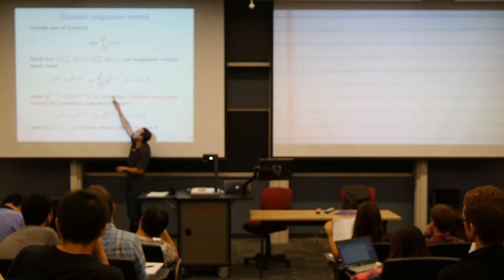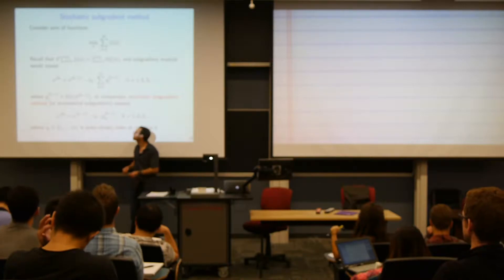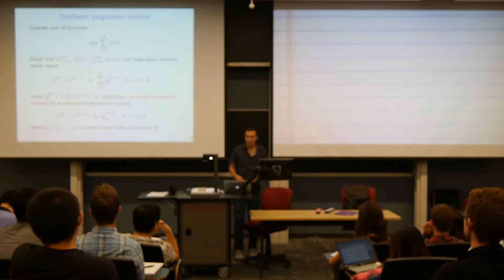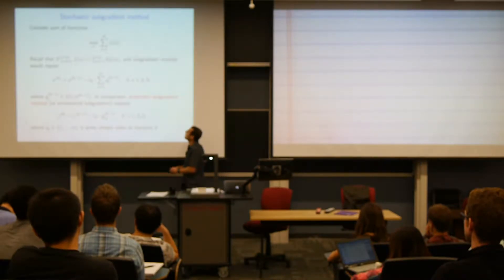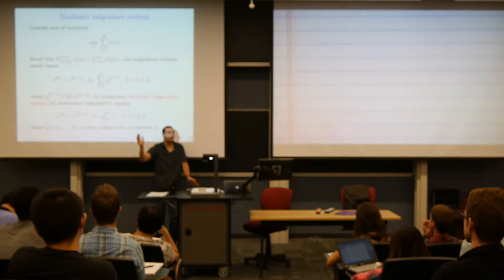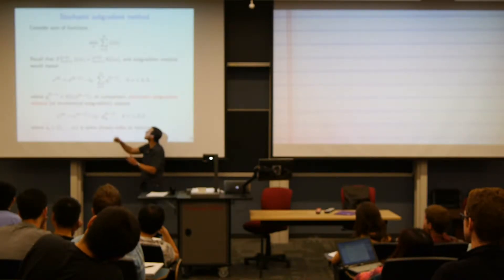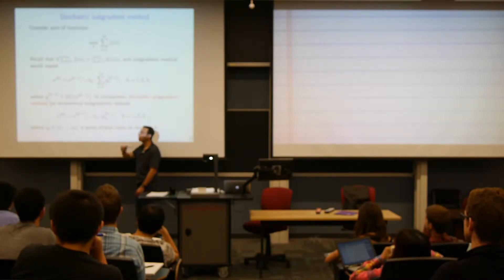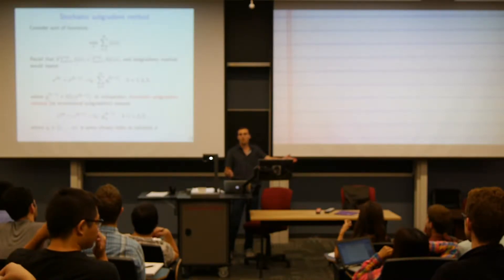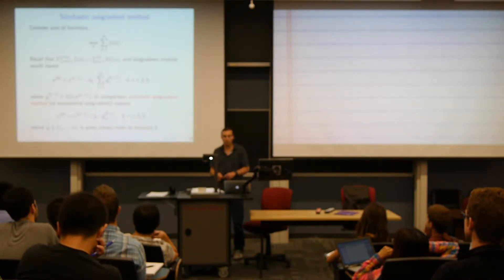The idea behind stochastic subgradient methods — or stochastic gradient methods when smooth — is simple: instead of summing all the subgradients, just pick one at random. Pick an index iₖ uniformly at random between 1 and m, and move in the direction of gᵢₖ rather than the sum of all gᵢ's. In one iteration you might use the 11th function's subgradient; in the next, the 107th's. Stochastic gradient descent (SGD) is the special case when the functions are differentiable.